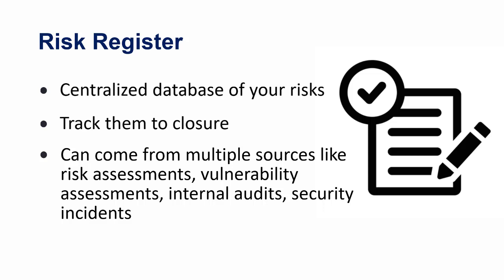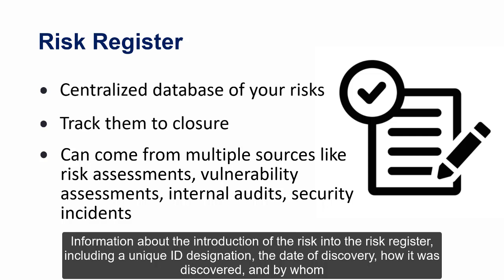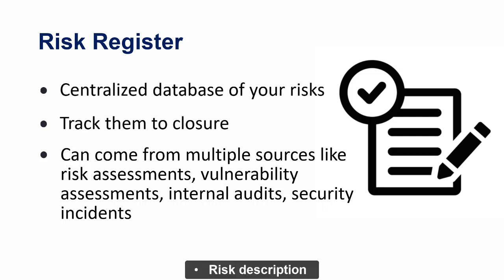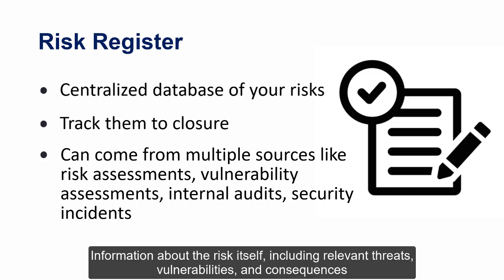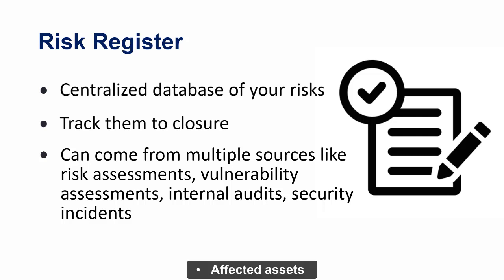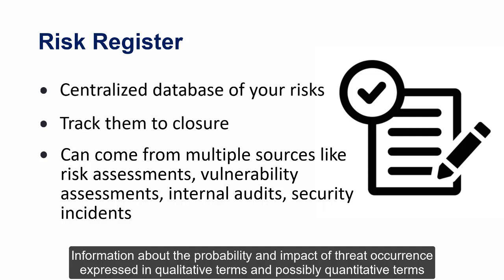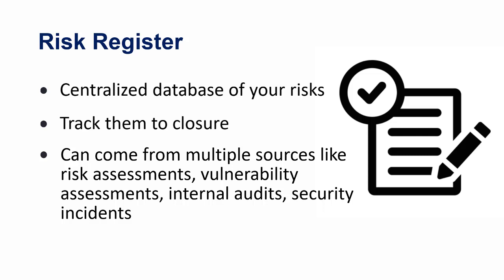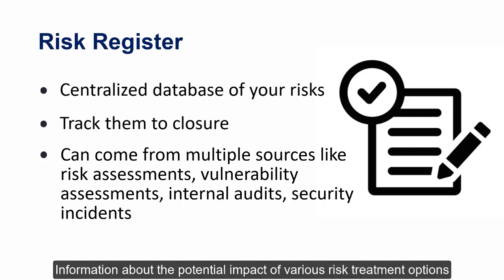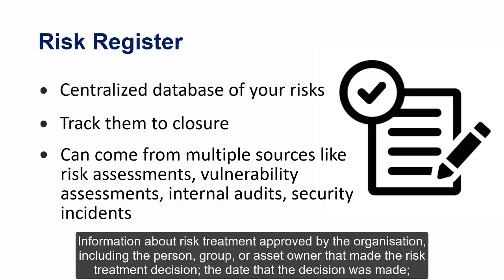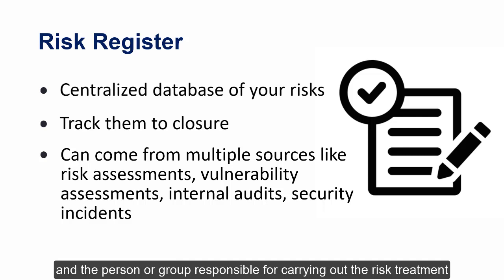Typical elements in a risk register include: risk identification (unique ID, date of discovery, how and by whom it was discovered), risk description (relevant threats, vulnerabilities, and consequences), affected assets (asset groups and their business owners), risk score (probability and impact in qualitative and possibly quantitative terms), risk treatment analysis (potential impact of various treatment options), and risk treatment information (the person or group that made the decision, date of decision, and who is responsible for carrying out treatment).